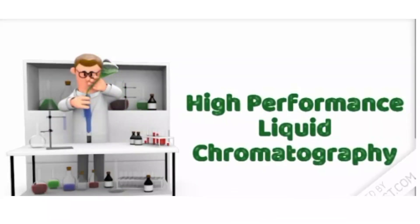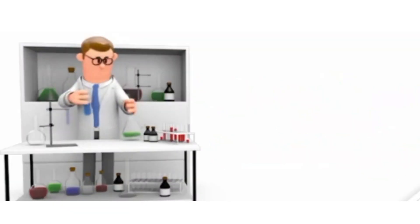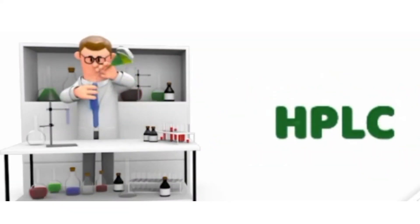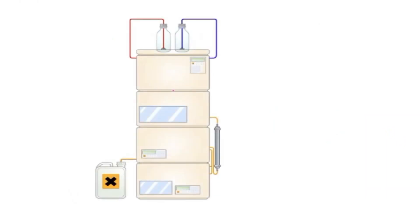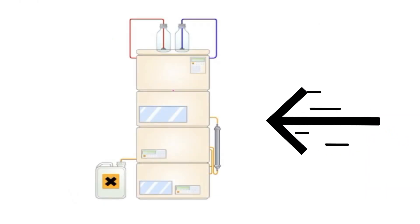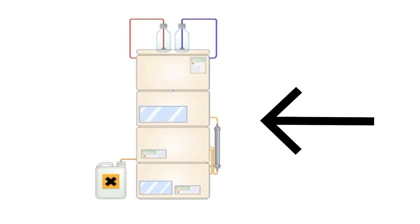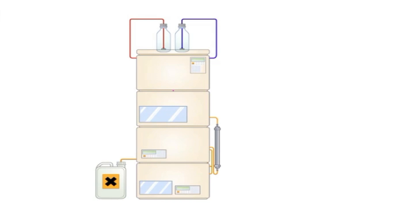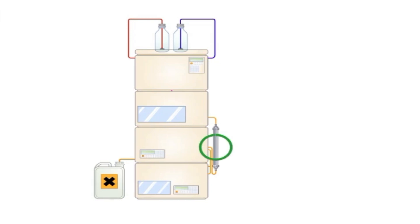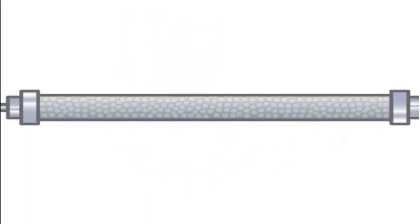High Performance Liquid Chromatography, or HPLC, is a highly versatile technique that separates components of a liquid mixture based on their different interactions with a stationary phase. HPLC is an adaptation of column chromatography.